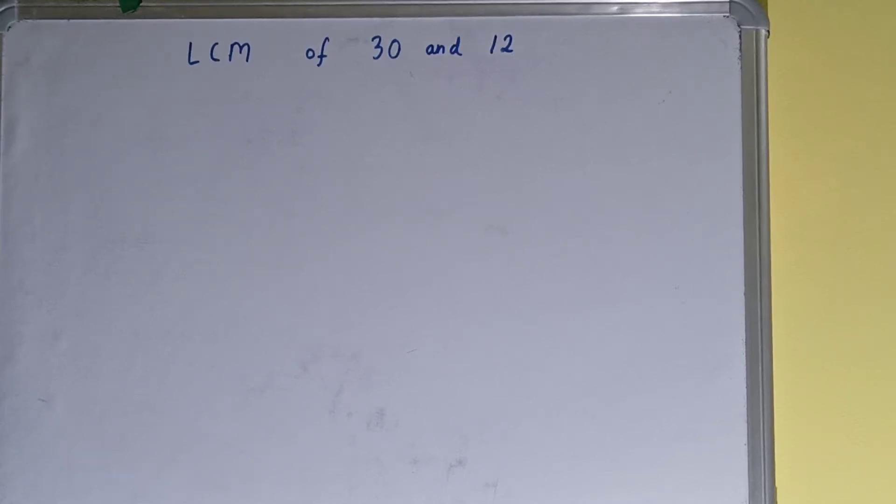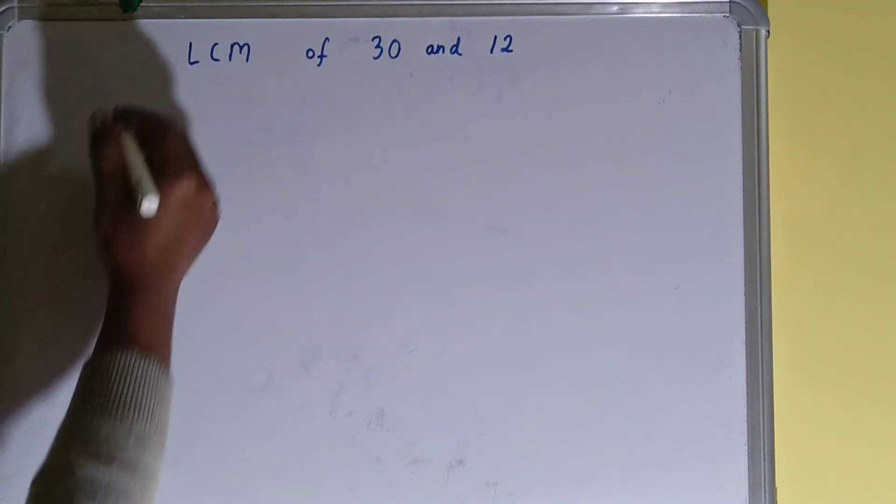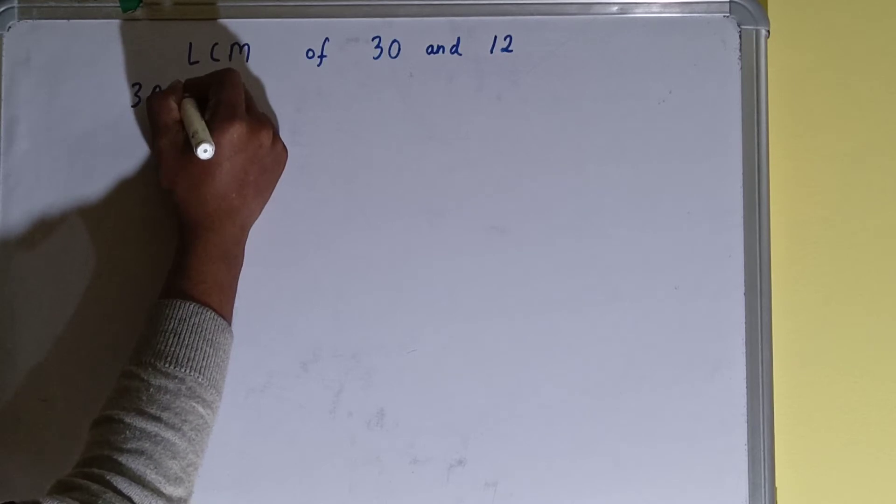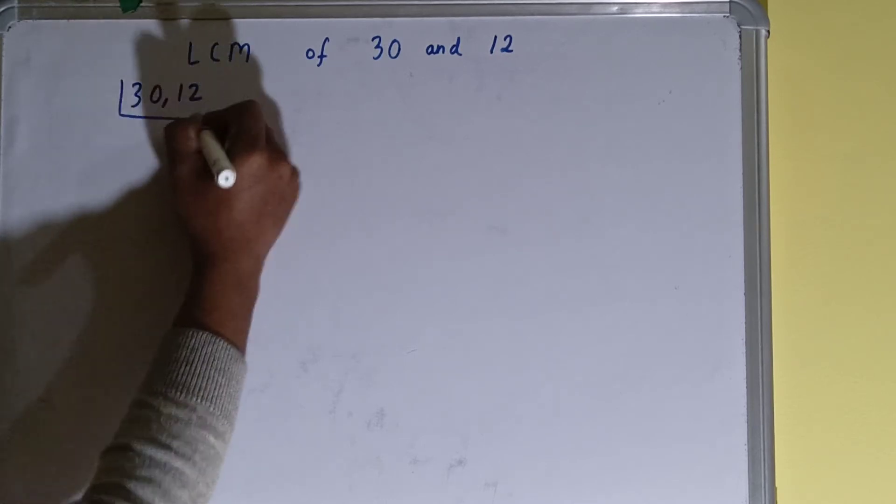Hello friends, and in this video I'll be helping you with the LCM of the numbers 30 and 12. To find it out, we first need to write both numbers like this: 30 comma 12.